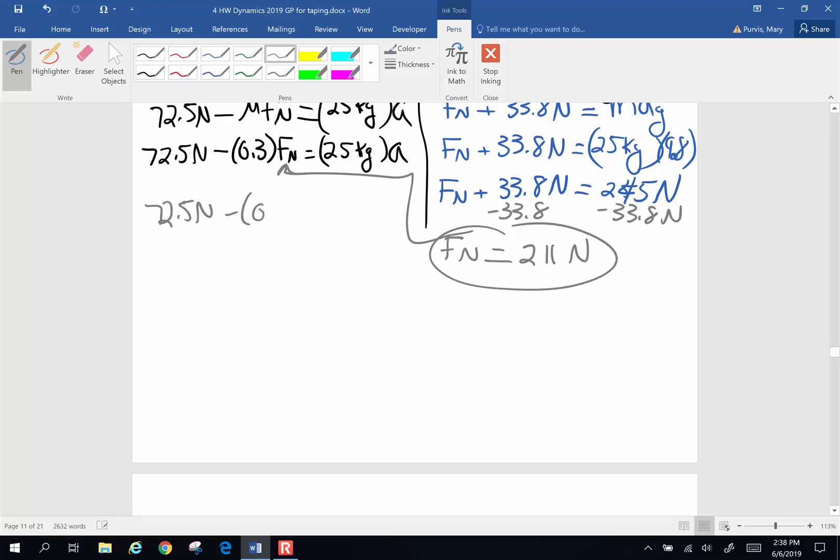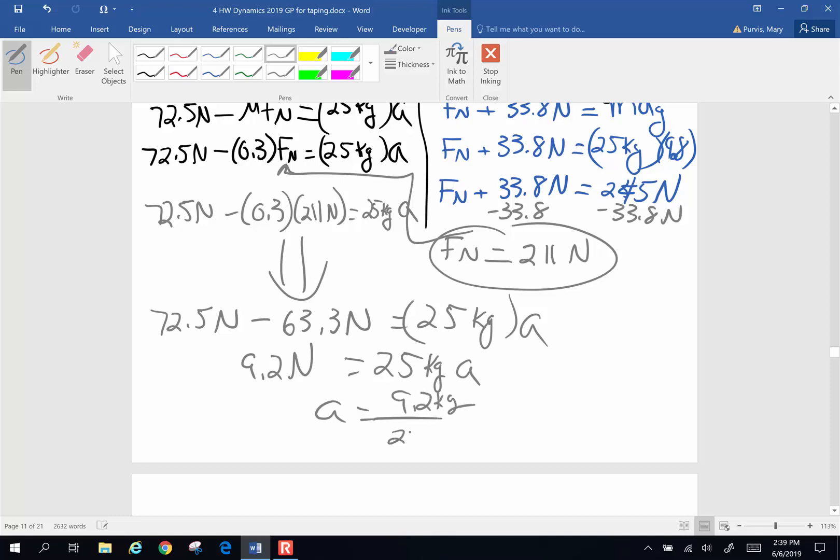72.5 minus 0.3 times 211 equals 25 kilograms times A. So 72.5 newtons minus 63.3 equals 25 kilograms times A. I end up with 9.2 newtons equals 25 kilograms A. So A is 9.2 newtons divided by 25 kilograms. And I get an acceleration of 0.368 meters per second squared.